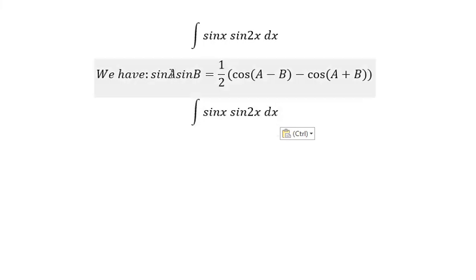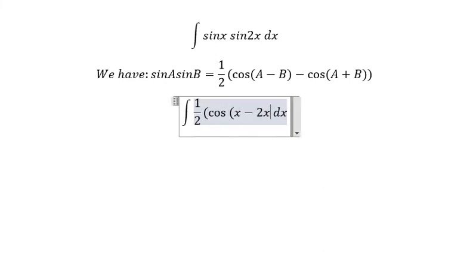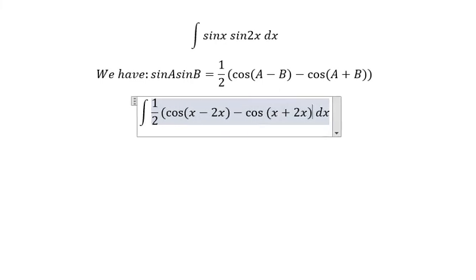So A is x, B is 2x. So this one we change to 1 over 2 cosine x minus 2x minus cosine x plus 2x.